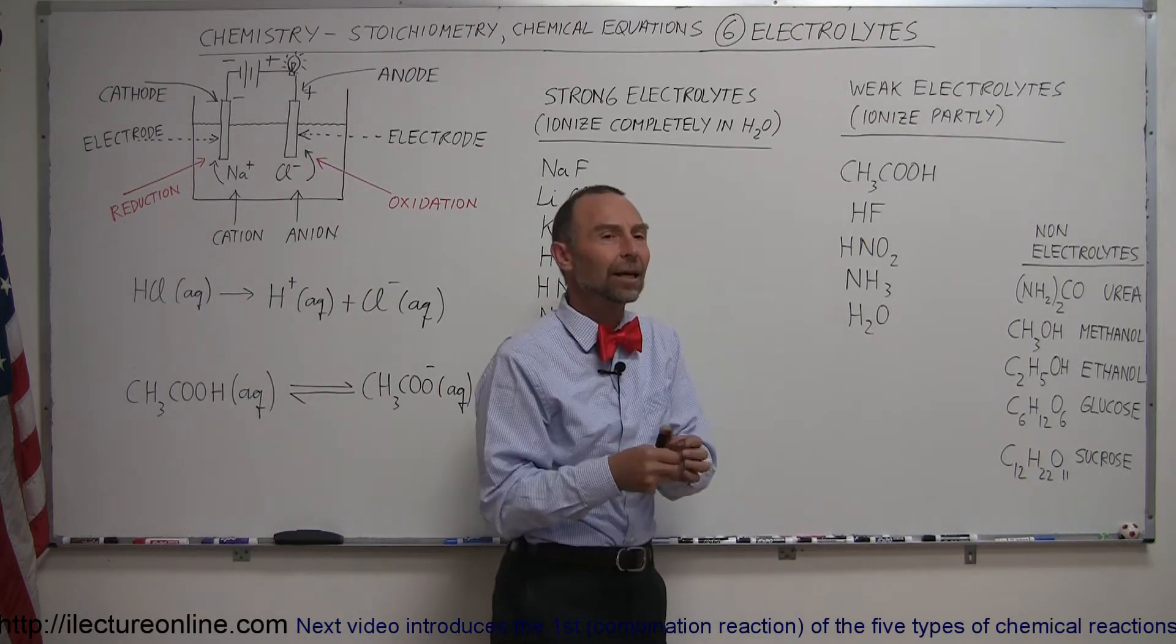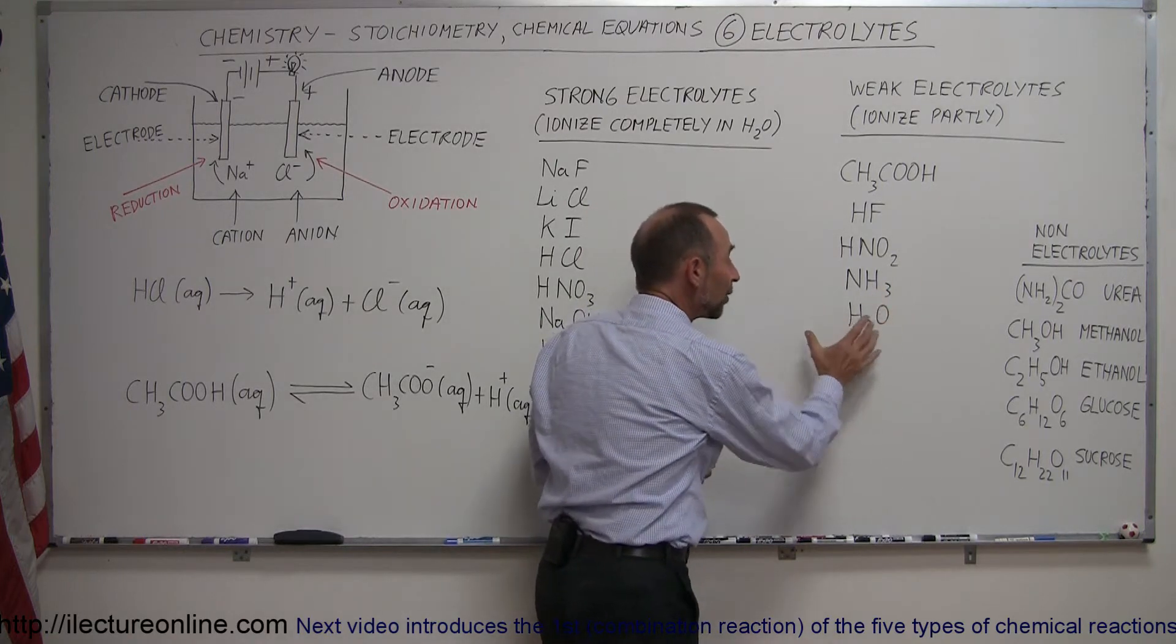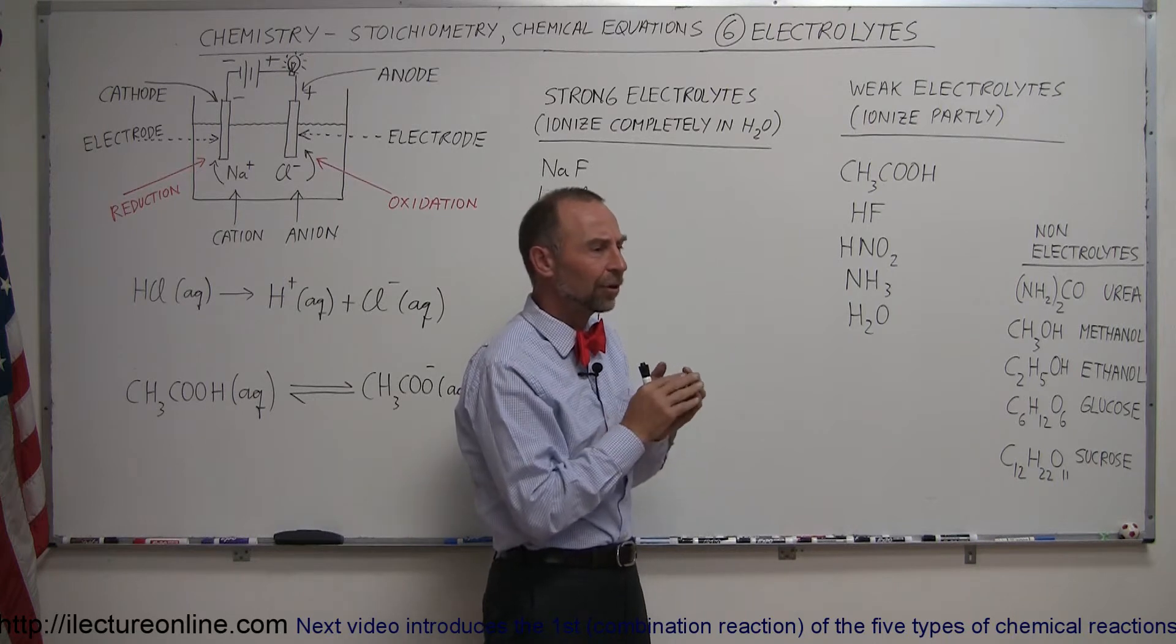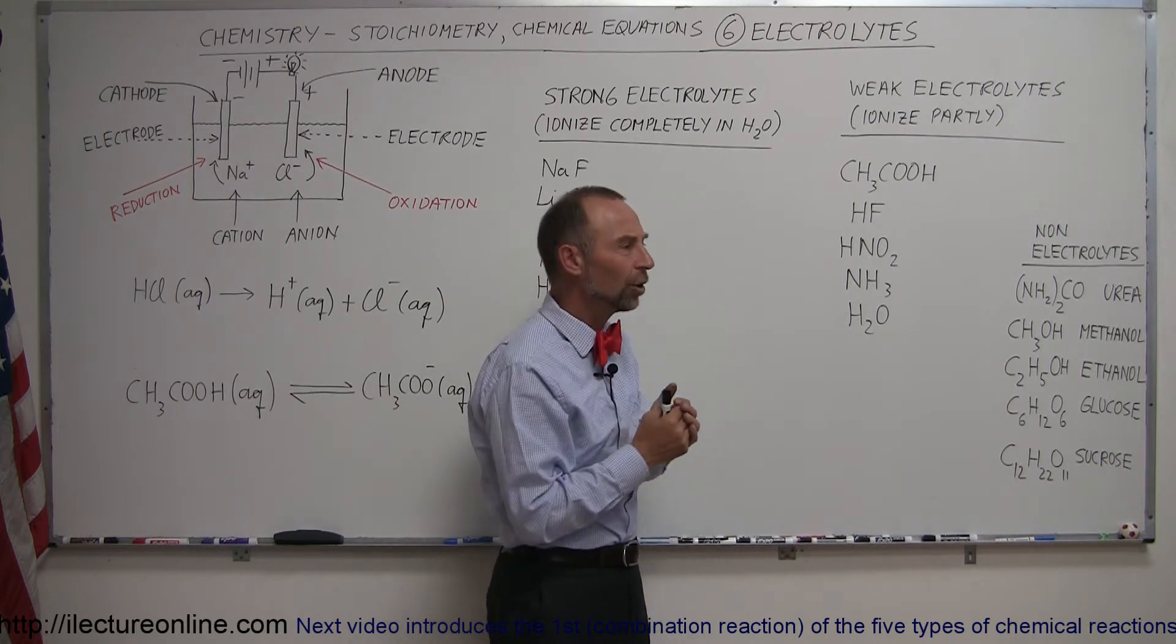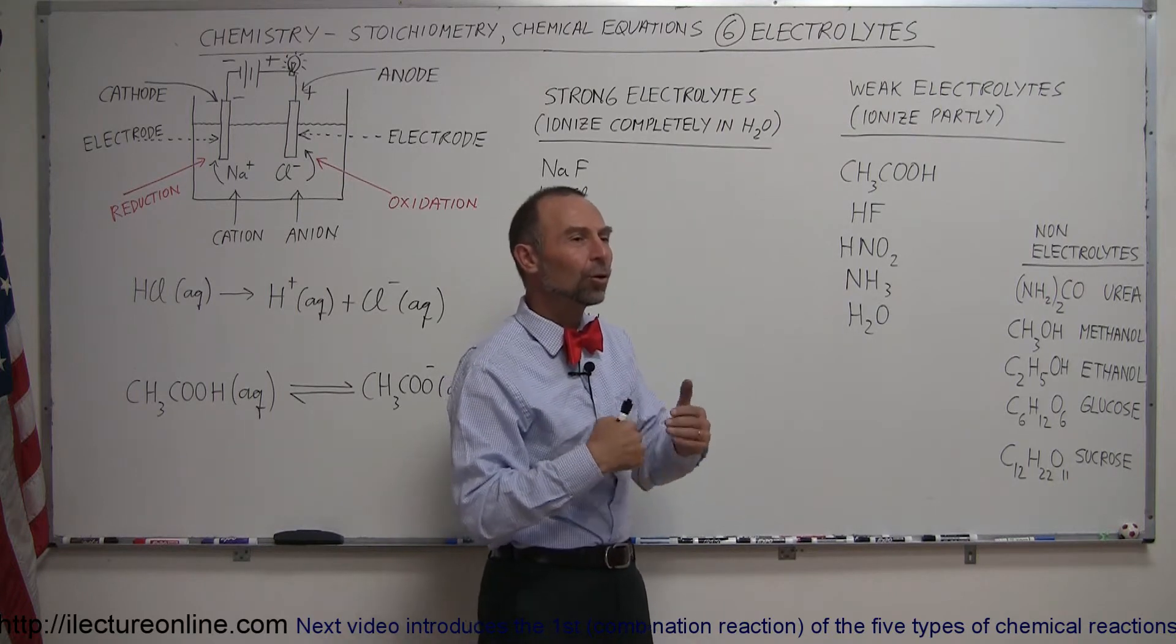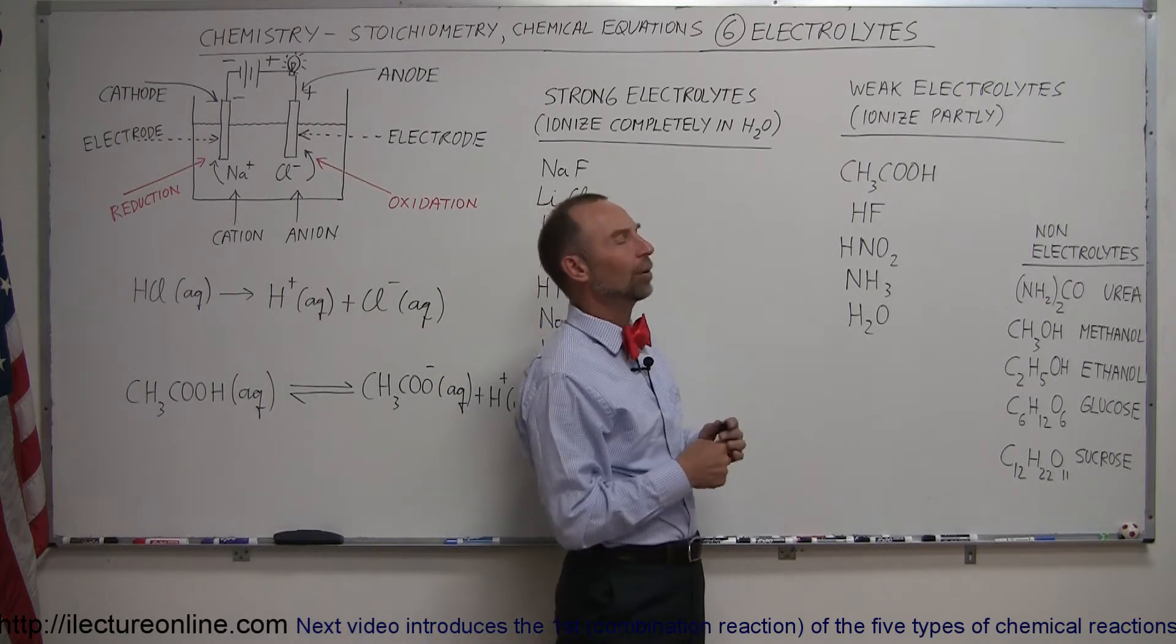ammonia, and water itself by itself do not produce very many ions. Some are turned into ions but not all of them, and so we would call them weak electrolytes.